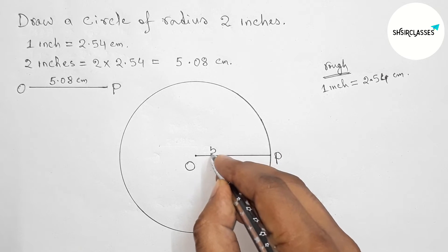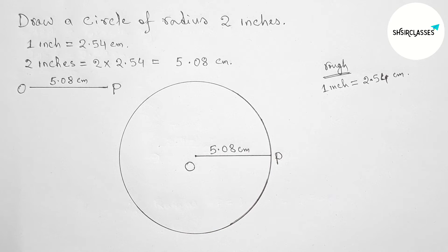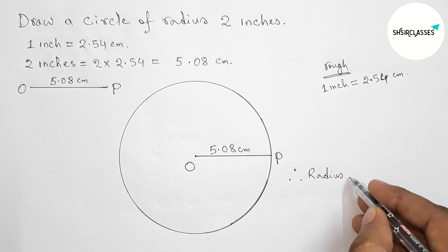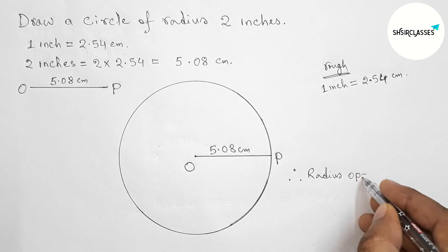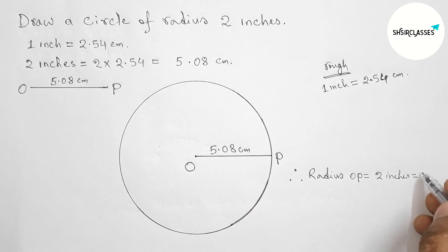Here OP is 5.08 centimeters, the radius of this circle. The radius OP is 2 inches or 5.08 or 5.1 centimeters approximately. That's all, thanks for watching.